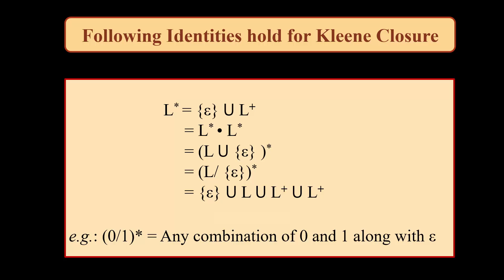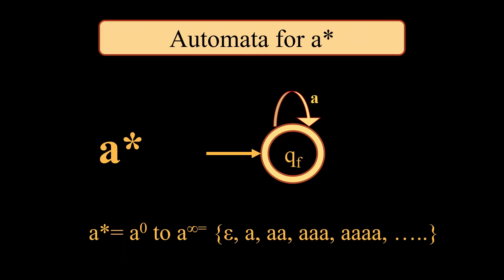If we have (0 or 1)* it means any combination of zero and one along with epsilon. Now we talk about automata for a*. If we talk about a*, the value of a can range from 0 up to infinity. The automata for this has the start state also as the final state, and we have a loop of a.